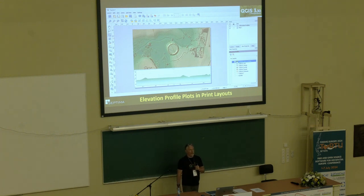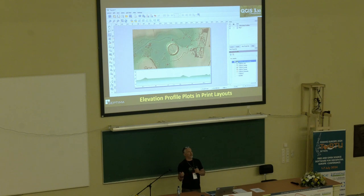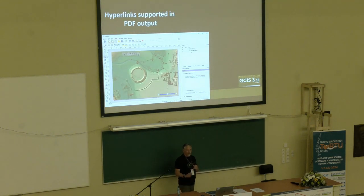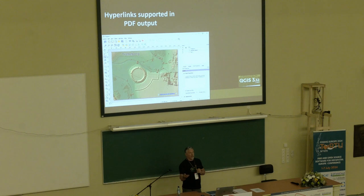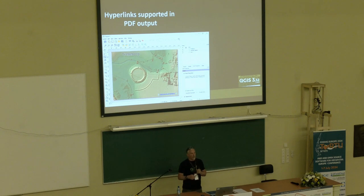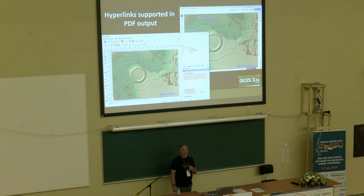There's now an Add Elevation Profile Plot available in the print composer. When you load this and select it, you can choose an existing profile plot in your project, and it'll adopt those configuration settings for that profile plot. The last nice feature for print compositions is hyperlink support for PDF output: if you add text to QGIS, render it as HTML with a hyperlink string, when you export to PDF, that link stays active in the PDF.